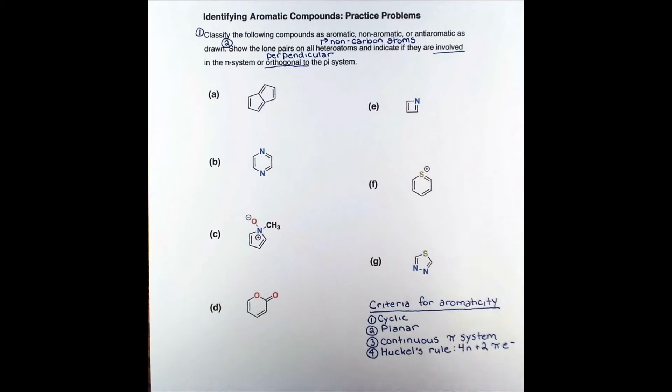Now, if we replace N with zero or small positive integers, we find that our pi system must have a specific number of electrons to be aromatic. We may also need to identify anti-aromatic compounds, which are cyclic planar compounds that have a continuous pi system containing 4n pi electrons. Anti-aromatic compounds are very unstable.